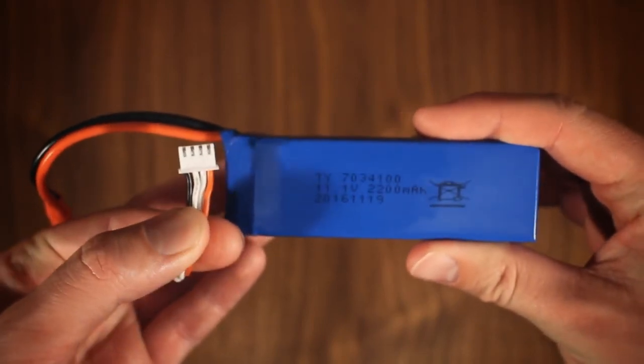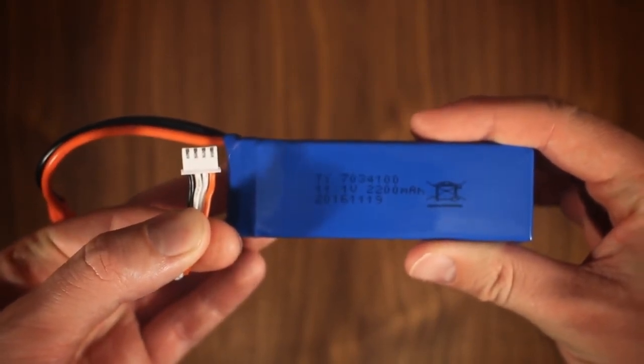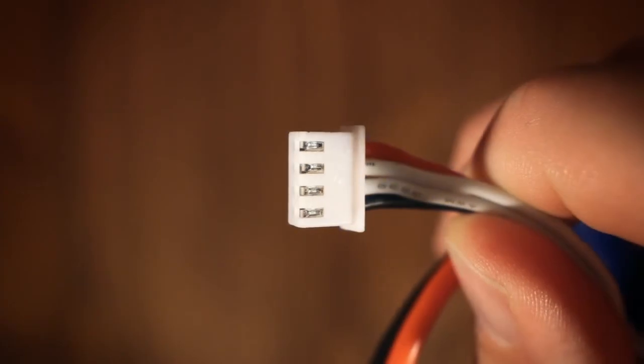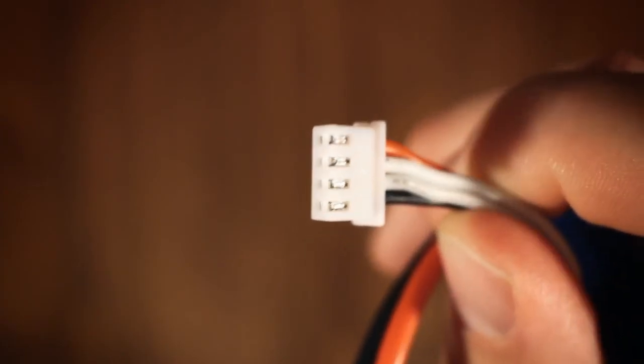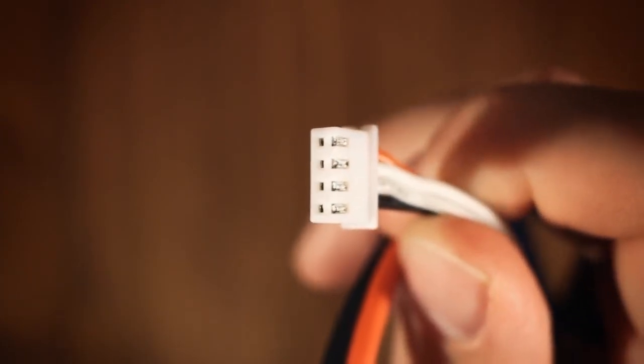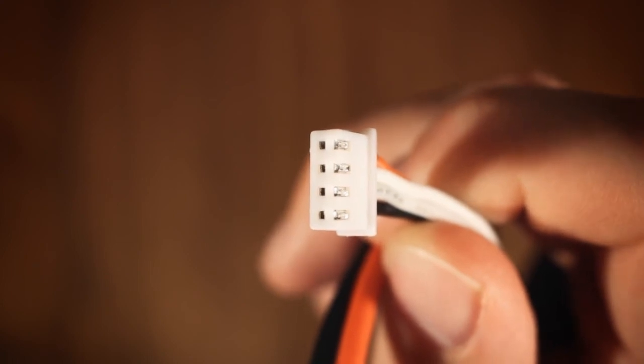As implied by the name, the balance plug – found on practically all multi-cell batteries – is really intended for accessing and balancing the individual cells of the battery, but can be used for powering things as well, which may be convenient with lower current equipment on the side.